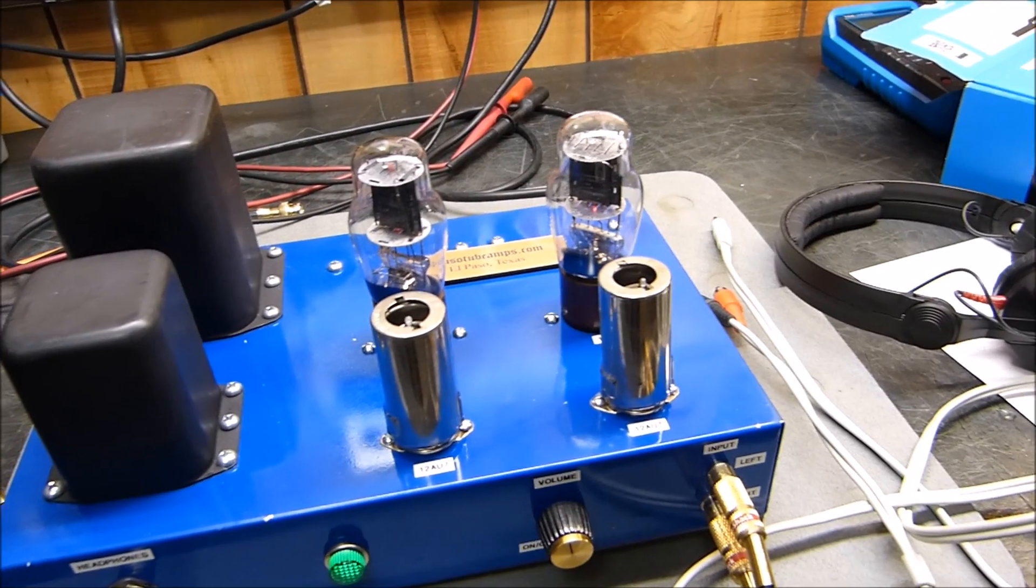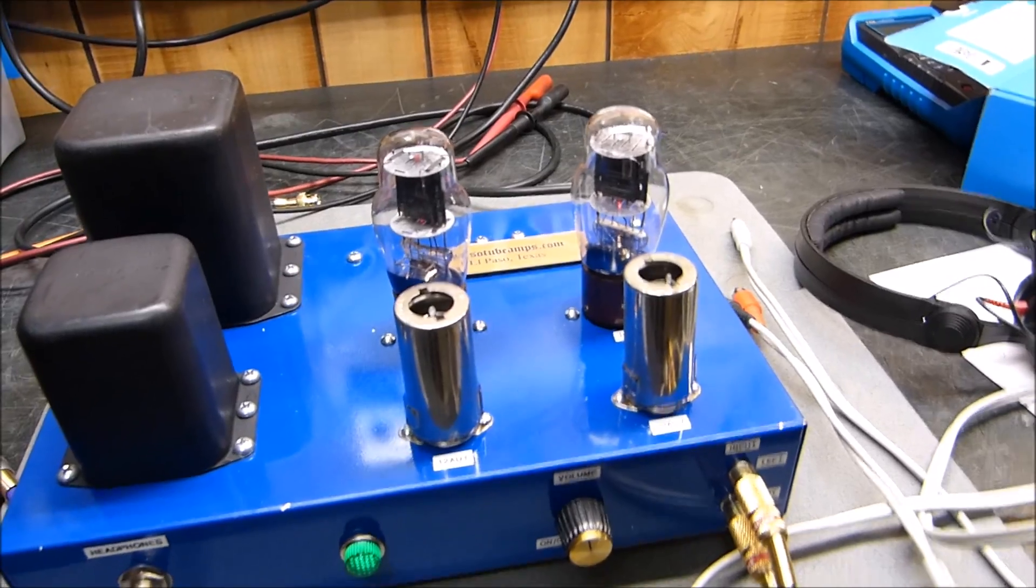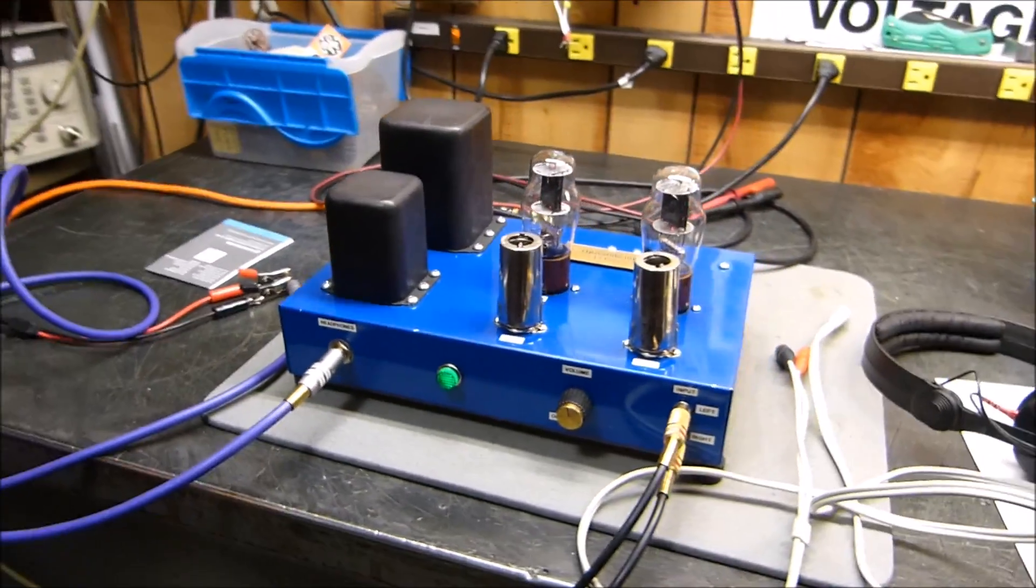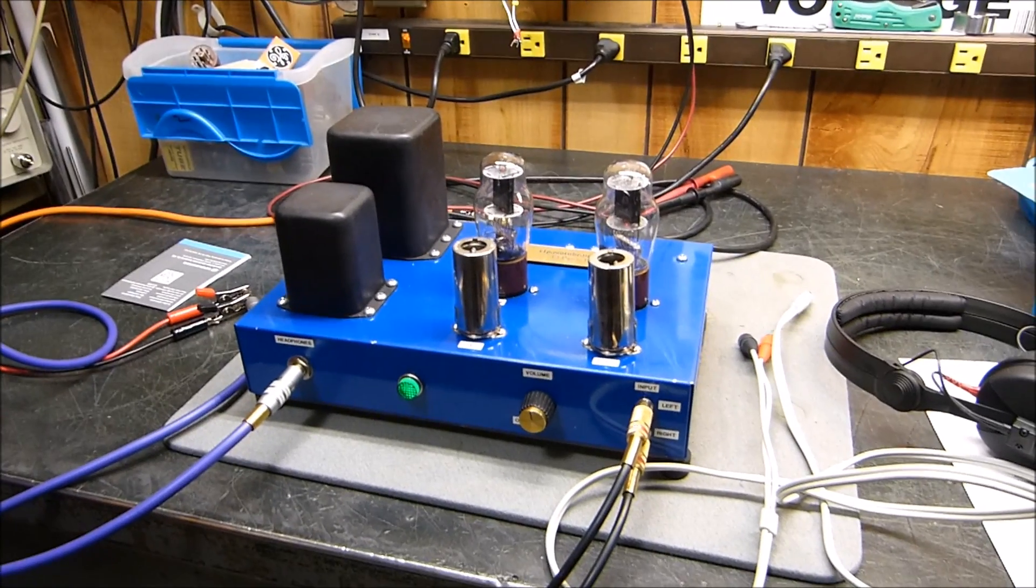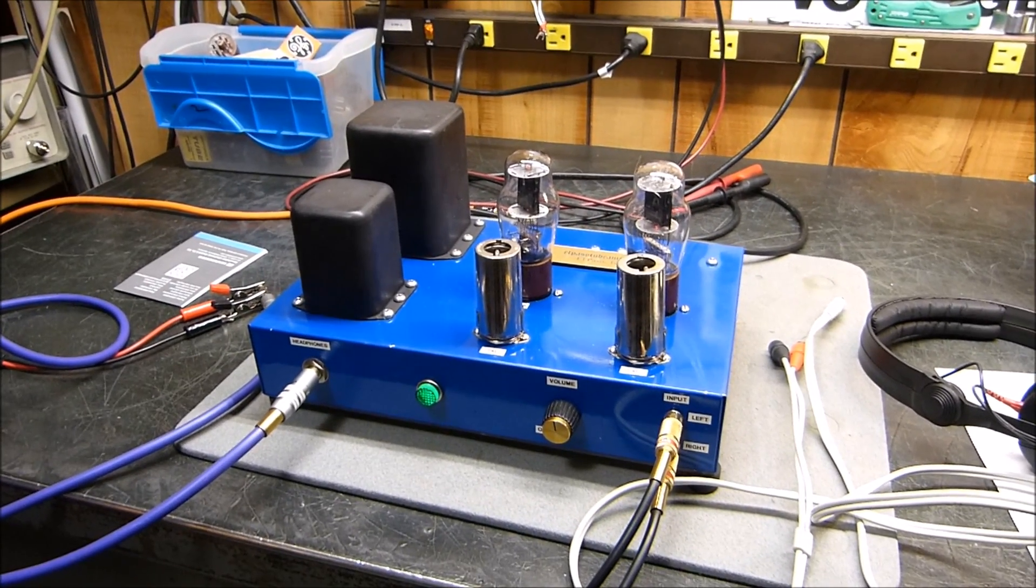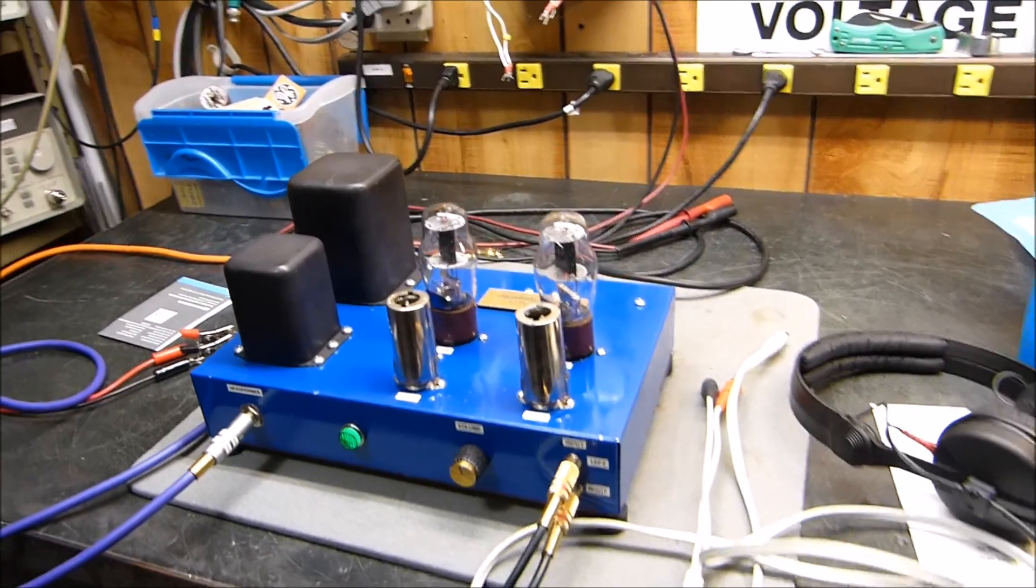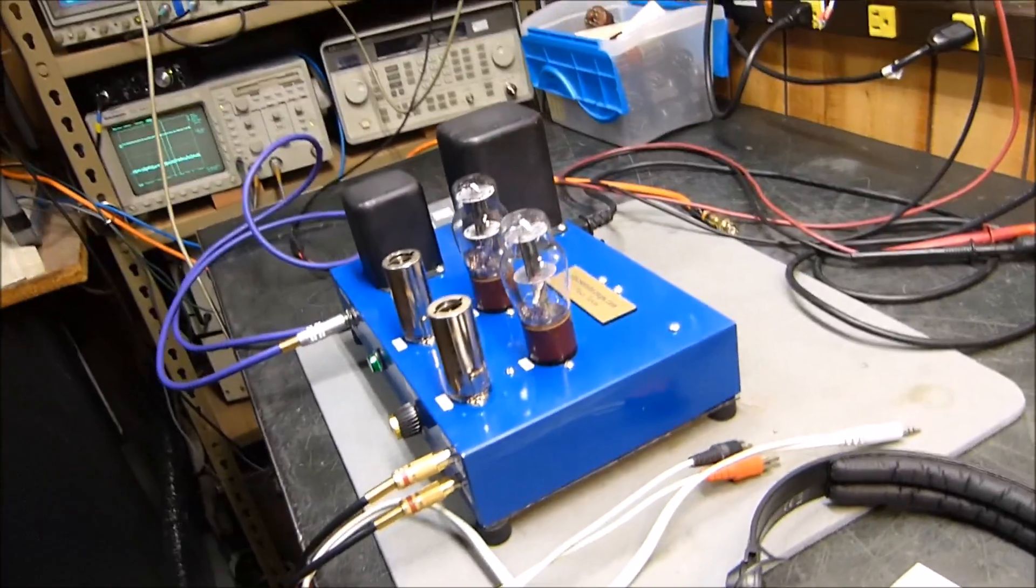These little tubes are actually transmitting tubes from World War II era, and they're not made for audio. They are generally made to run class C for an RF amplifier. But there it is, and for what it's worth, it's cute and it sounds great. I wish you could hear it, but that's not going to work. I can't hold the microphone up to these headphones, I think they'd sound pretty tinny.